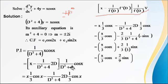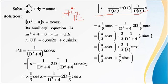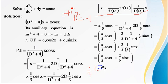The value of v is cos(x). For sin or cos, we replace D² with −a², where a is the coefficient of x, which is 1. So −1² = −1, giving −1 + 4 = 3. Therefore we get (1/3)·cos(x). This gives x·(1/3)·cos(x) minus (2D)/(D² + 4) into (1/3)·cos(x).